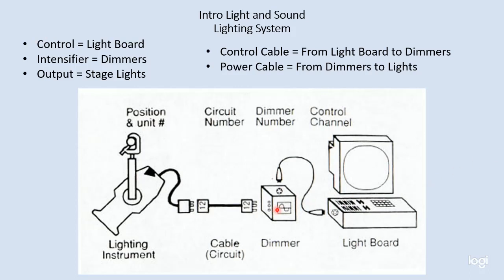The dimmers then receive the signal but are connected to a lot of power. The signal regulates how much power is sent out of each individual dimmer, and it runs along a cable or a circuit that then plugs into our light, making our light dim up and down. So we have two different kinds of cable: signal cable and power cable.